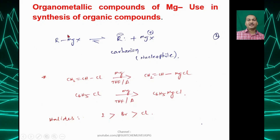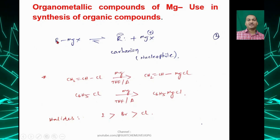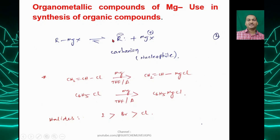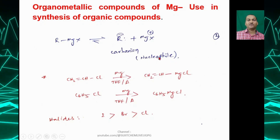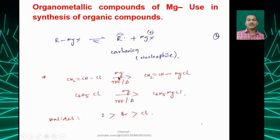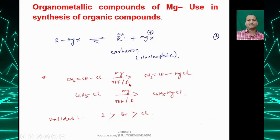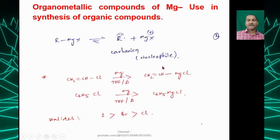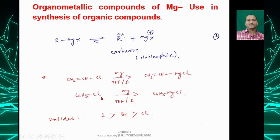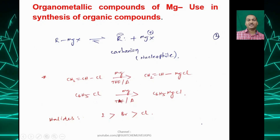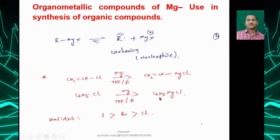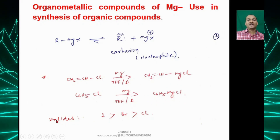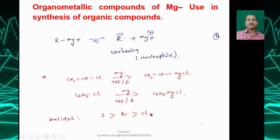RMgX has high ionic character — essentially R⁻ with both electrons and MgX⁺ — making it a carbanion or nucleophile. Benzyl halide can react with magnesium in THF with heat to give benzyl magnesium halide; chlorobenzene similarly gives aryl magnesium chloride. The reactivity order for halides is: I > Br > Cl.